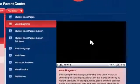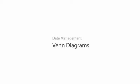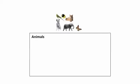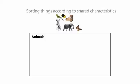Let's take a look at a video explaining Venn diagrams. Before you interpret data, you often have to sort it. A Venn diagram is a common tool for sorting things according to shared characteristics. A circle is used to contain all the objects with a particular characteristic.